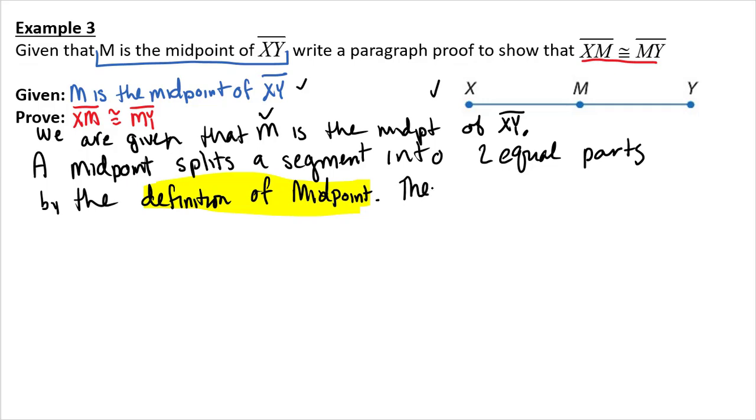So, then we can say, therefore, XM equals MY. I have two equal parts. By the definition of congruence.